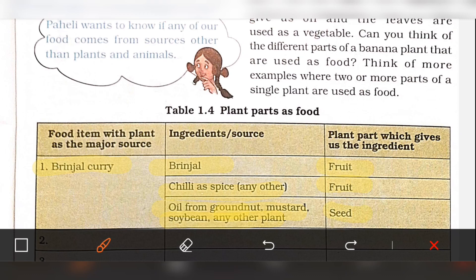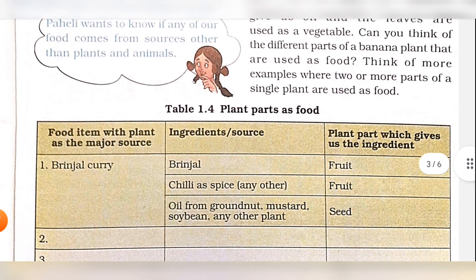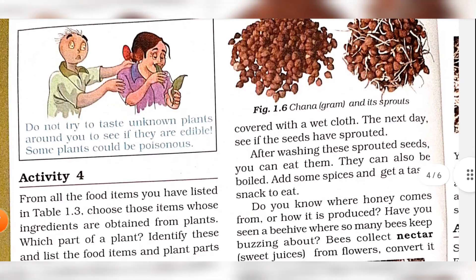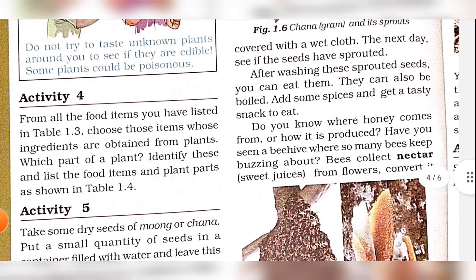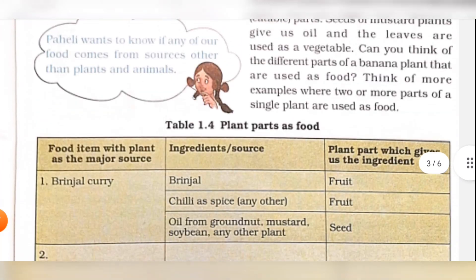You can use different parts of a plant and list them in Table 1.4 in your notebook. Activity 4: From all the food items you have listed in Table 1.3, complete Table 1.4.